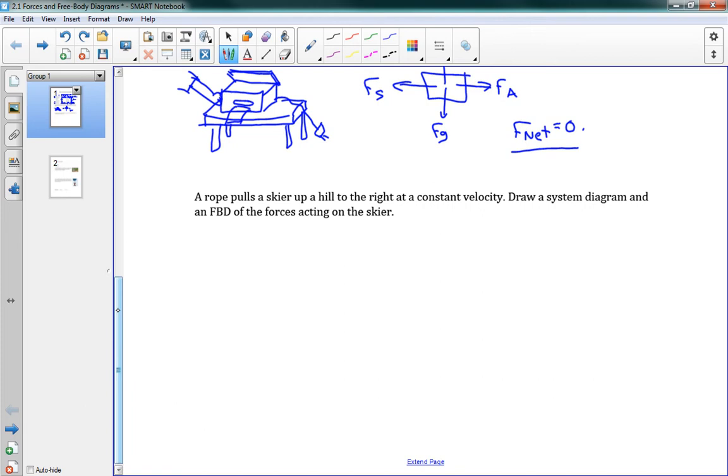We'll try making those sorts of diagrams now for the next problem. It says a rope pulls a skier up a hill to the right at a constant velocity. Draw a system diagram and a free body diagram. So, I'm going to draw this here. I'm going to draw my skier. Here's my skier and he's on some skis. He's being pulled up the hill by a rope. And we'll just draw the hill. So here's the hill that they're being pulled up. And that's my system diagram.